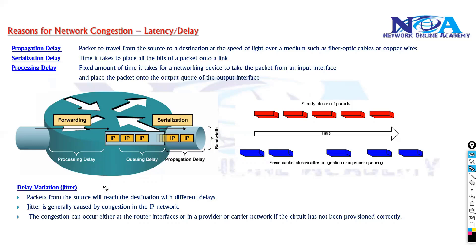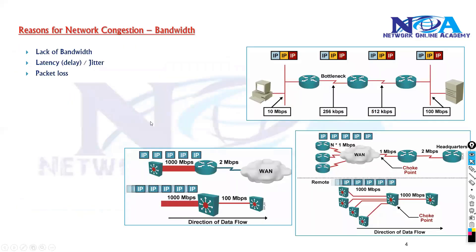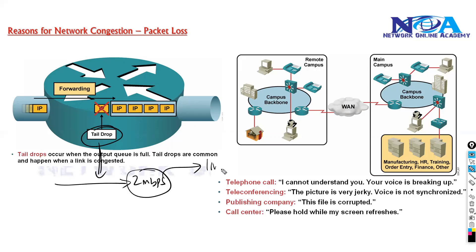To fix these issues, we use quality of service mechanisms such as queuing, where we match packets and give priority to specific traffic. Congestion can be due to lack of bandwidth or different types of delays, and this leads to packet loss — where packets are being dropped. For example, if you are sending 2 Mbps on a 1.5 Mbps link, the router tries to store packets in a queue before dropping them. By default, it performs tail drop, meaning the last packets are automatically dropped.